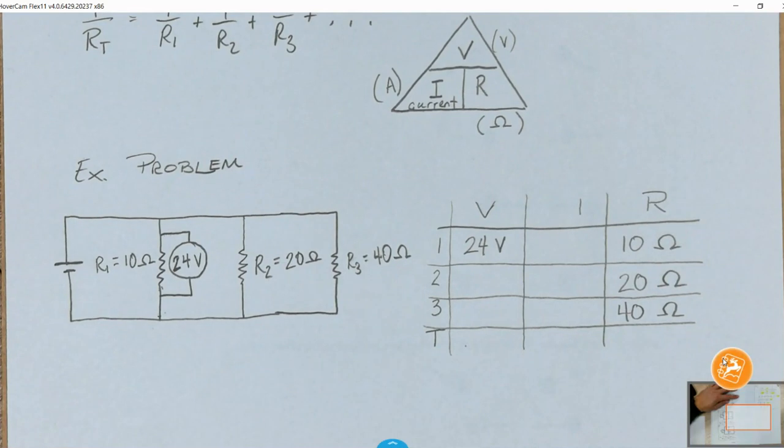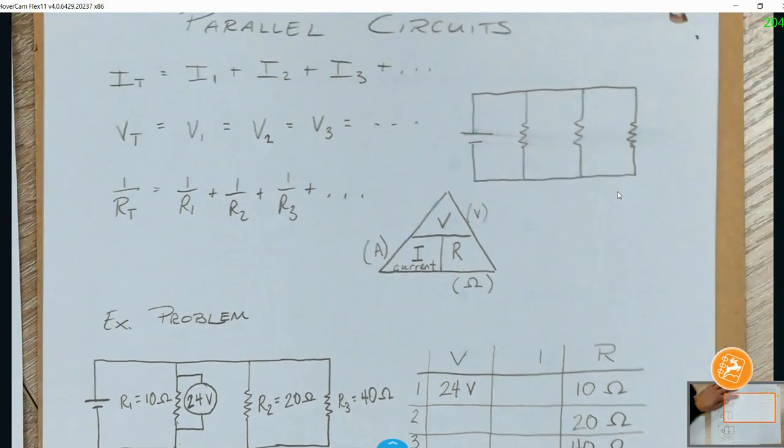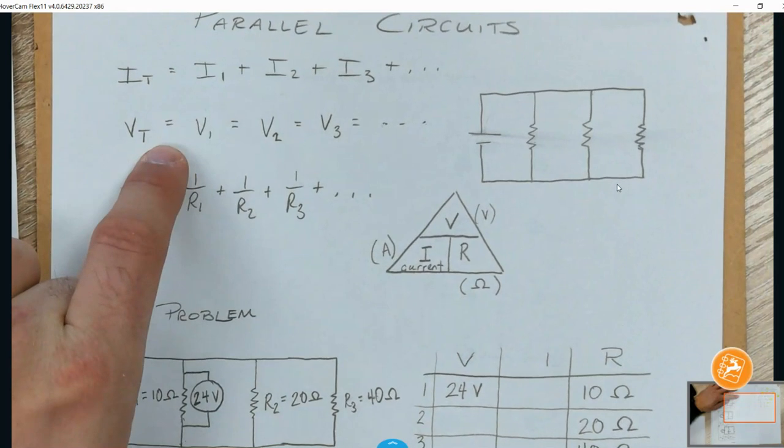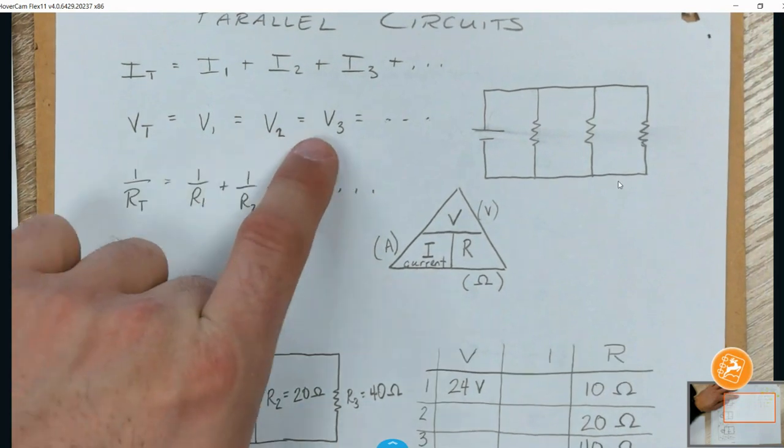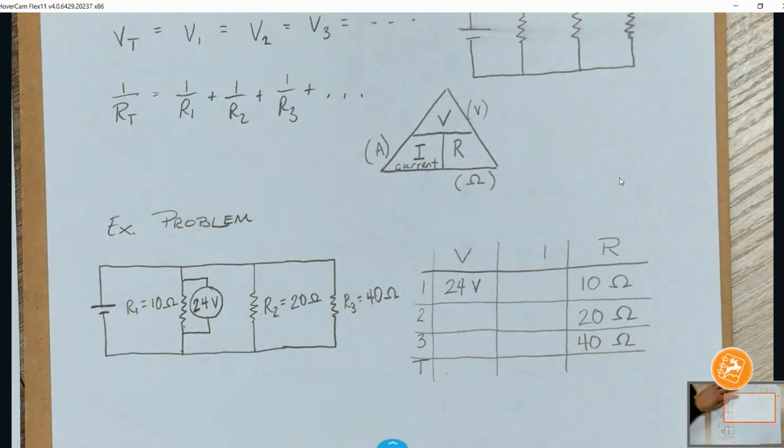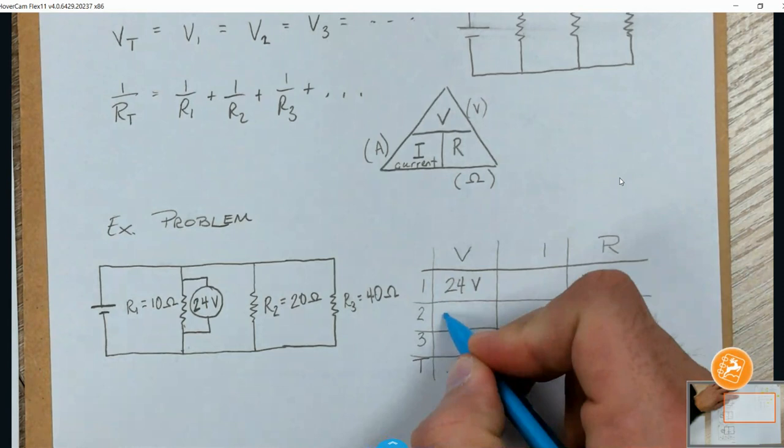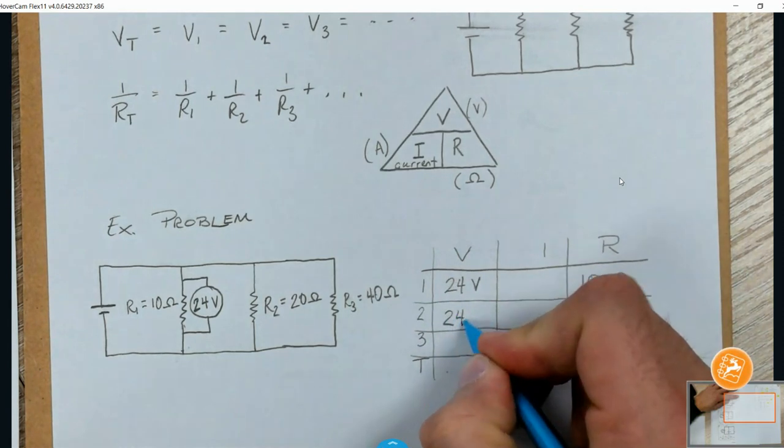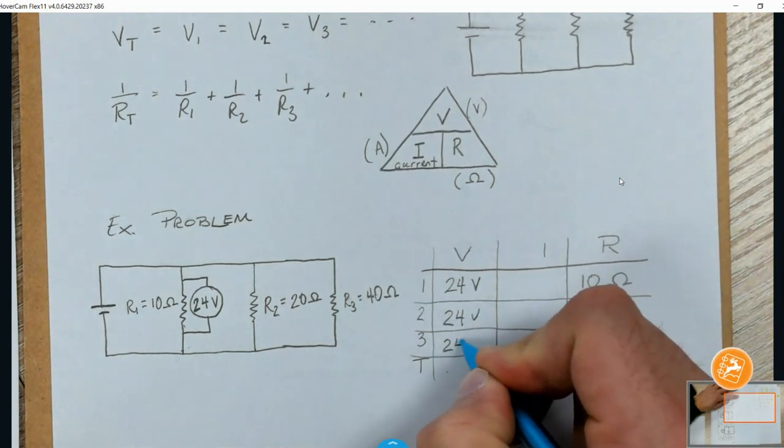So for this, oh wait a minute. I'm missing something else, aren't I right? VT. VT. Look at this. See how all the voltages are the same. So once you know it at one point, it's going to be the same everywhere else. So we have 24 for all of these.